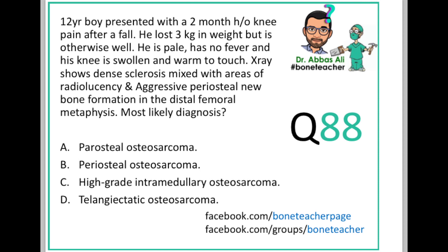Let's look at this MCQ. A 12-year-old boy presented with a two-month history of knee pain after a fall. He lost 3 kgs in weight but is otherwise well. He is pale, has no fever, and his knee is swollen and warm to touch. X-ray shows dense sclerosis mixed with areas of radiolucency and aggressive periosteal new bone formation in the distal femoral metaphysis. What is the most likely diagnosis? Options: parosteal osteosarcoma, periosteal osteosarcoma, high-grade intramedullary osteosarcoma, and telangiectatic osteosarcoma.